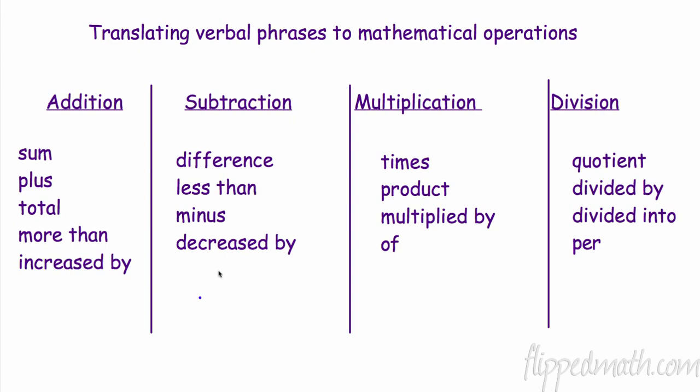The real good ones now, multiplication times, of course. Product is the answer to a multiplication problem. Don't even know I wrote this one, multiplied by, of course, that's multiplication. This is a good one. Of, this happens a lot with fractions or decimals. One-fourth of 24, that means one-fourth times 24. That's multiplication.